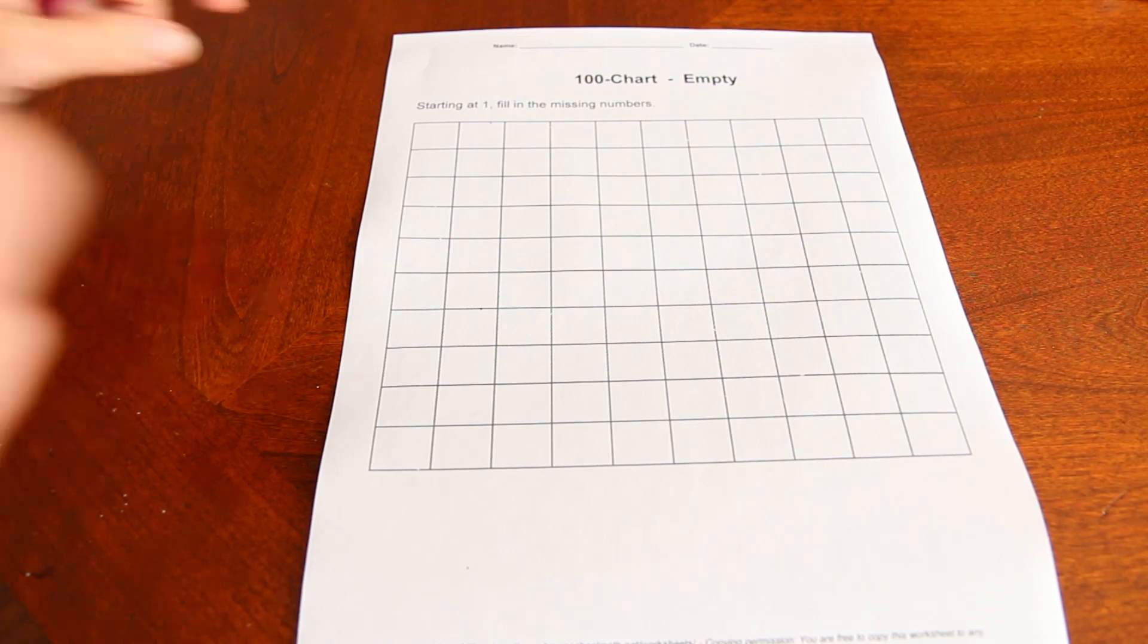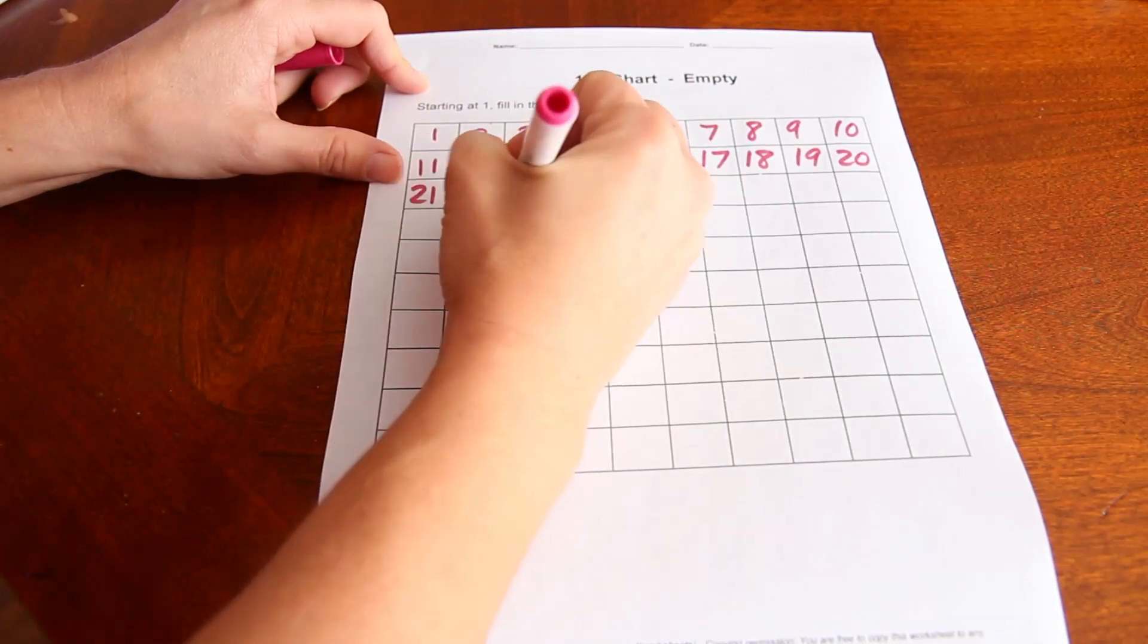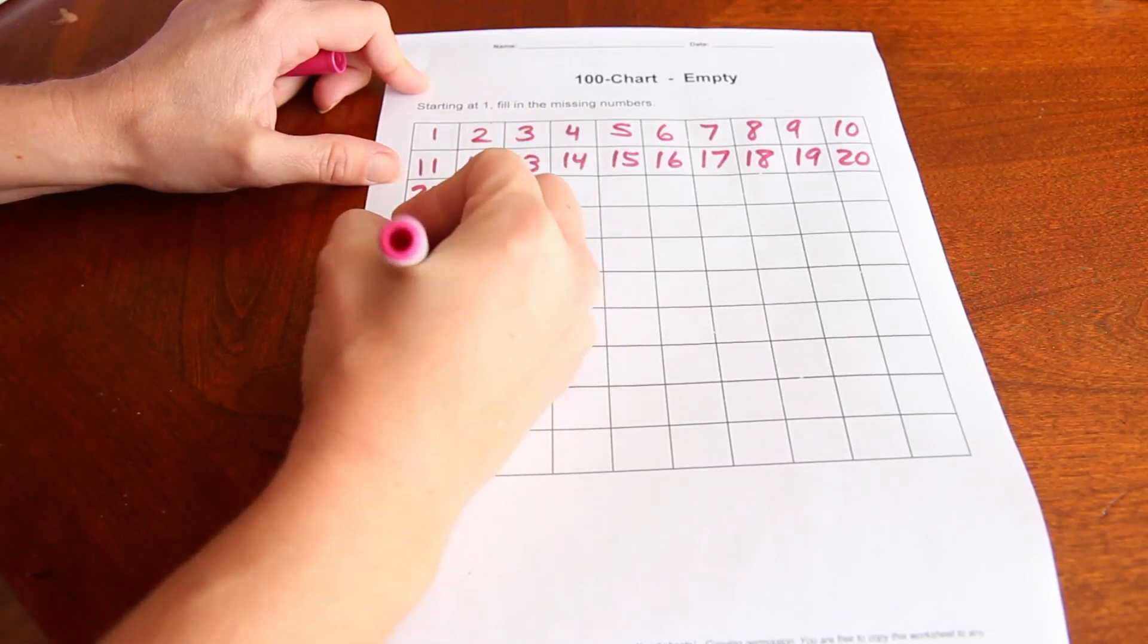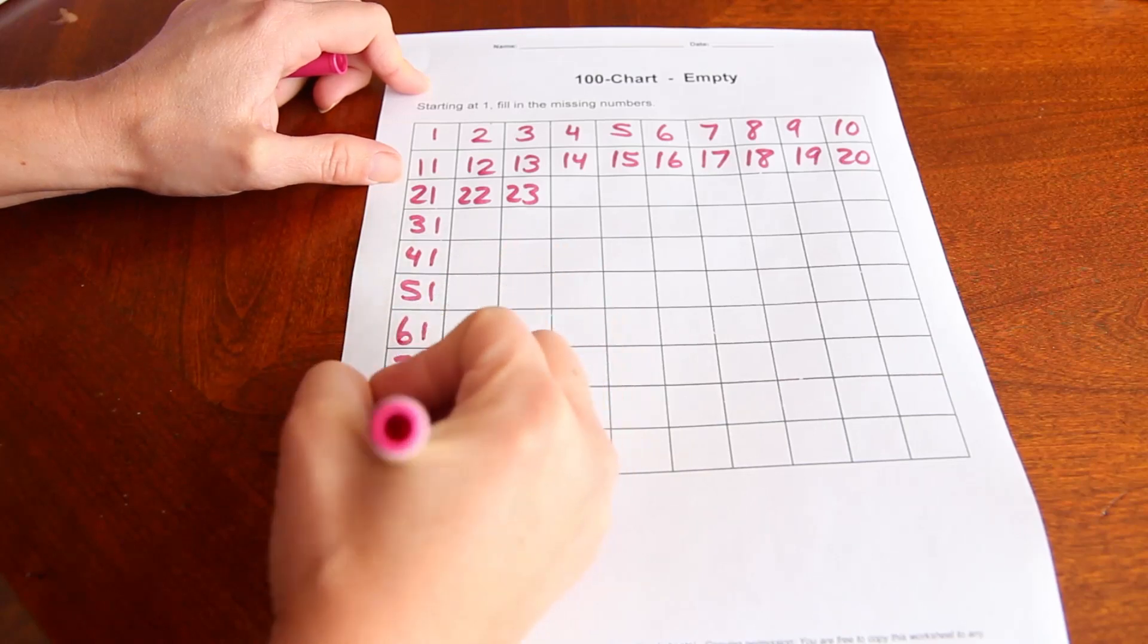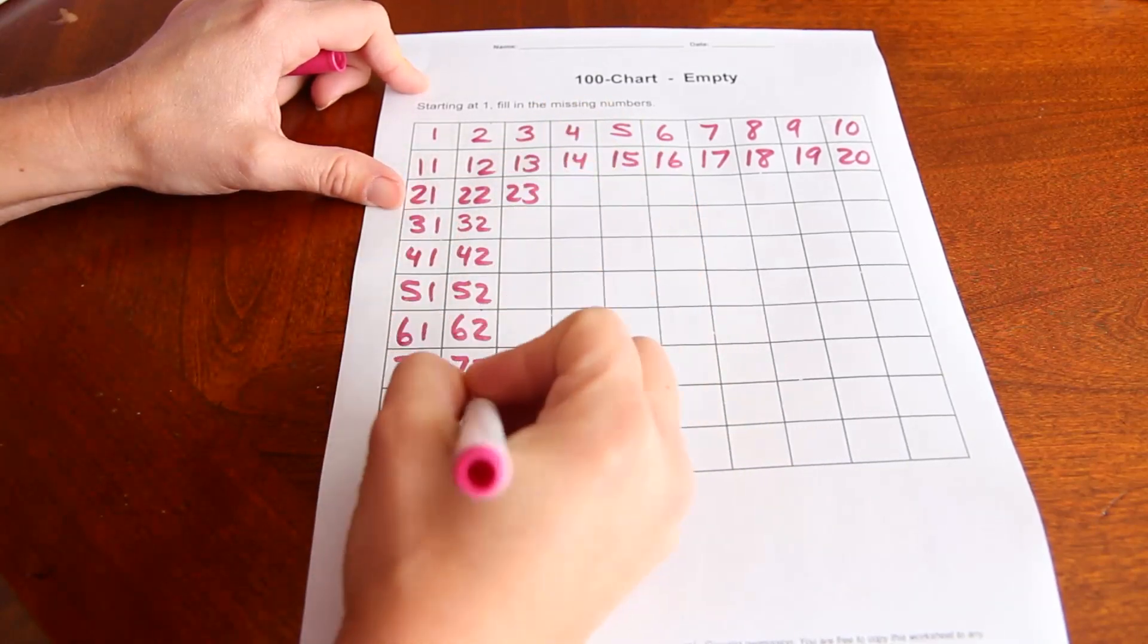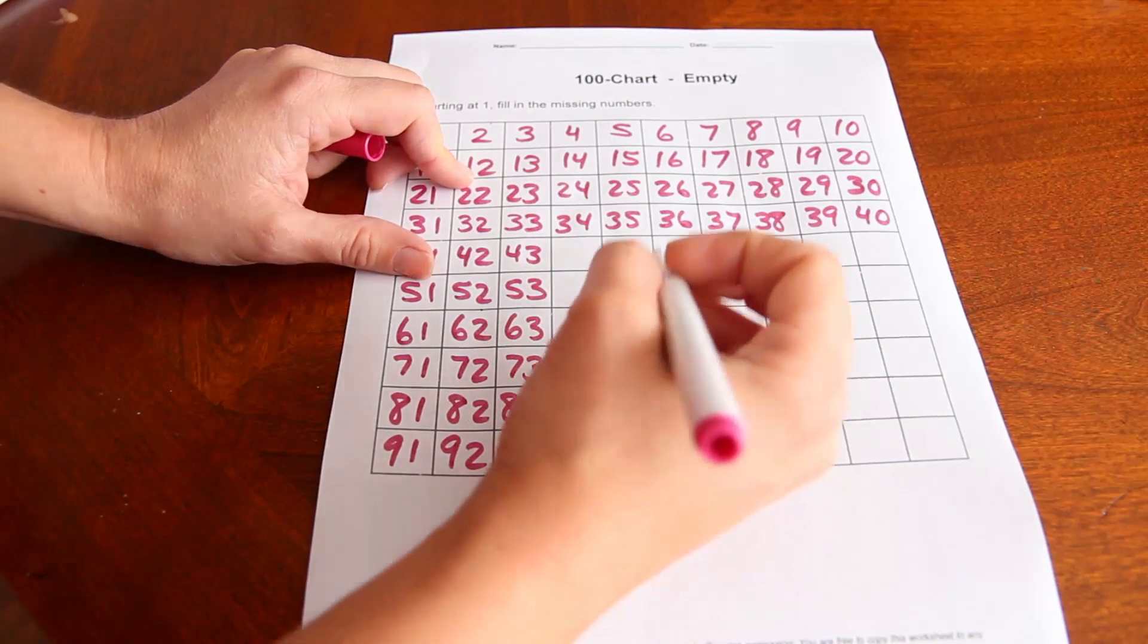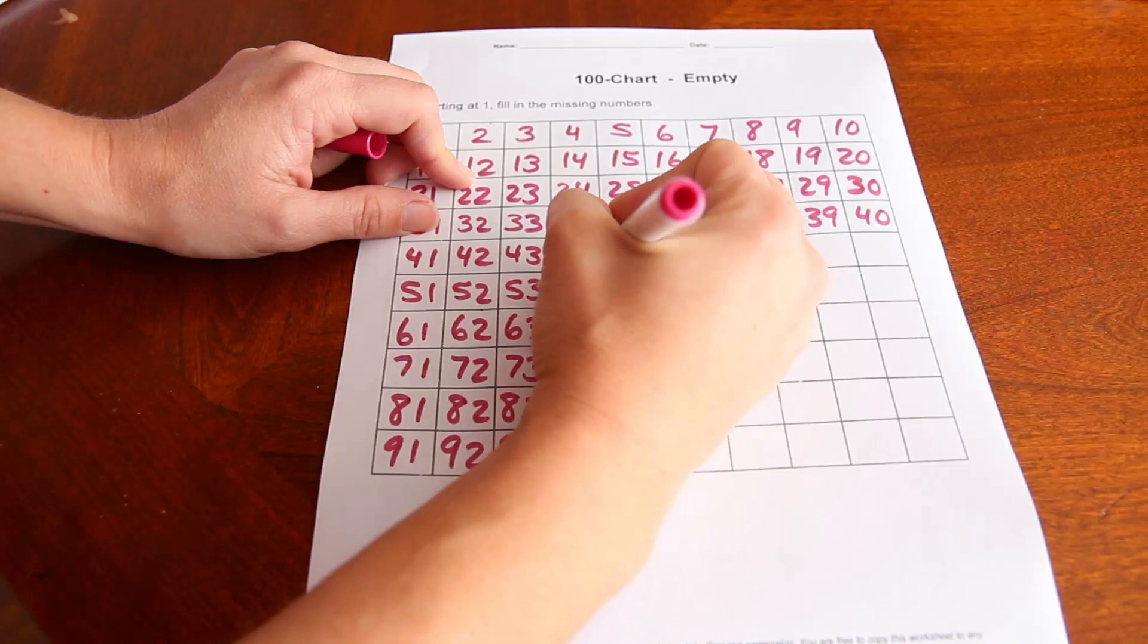So let's start. And your kids might start to notice this pattern and know that they go, so you can actually do 31, 41, 51. You can start going down the line if you wanted to. They can fill it in how they like as long as they're making sure that they do it correctly.